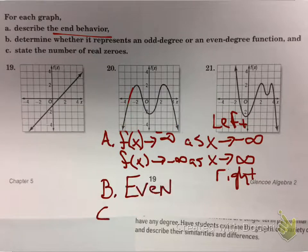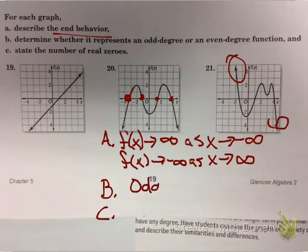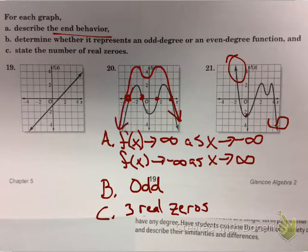Then you can tell me, because they both go in the same direction, it's even. And then you could tell me from there that you can count how many times it crossed the x-axis and tell me how many real zeros. We won't worry about what degree it actually is or anything like that. You look at 21, same thing. As x approaches negative infinity, as x approaches the left, it goes to positive infinity. As x approaches the right, it goes down to negative infinity. Since they're going in different directions, that's an odd. And you can count that there are three real zeros. Very simple, right?